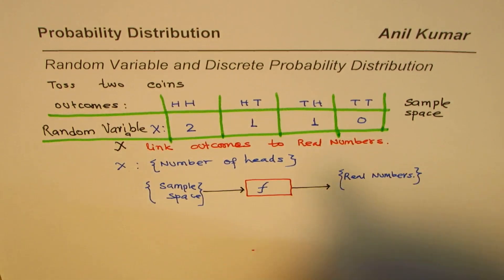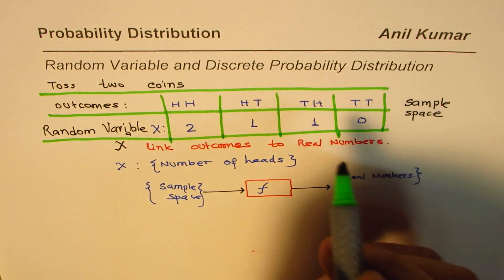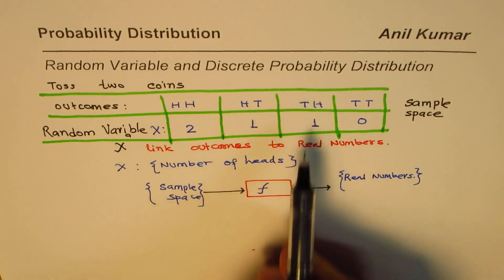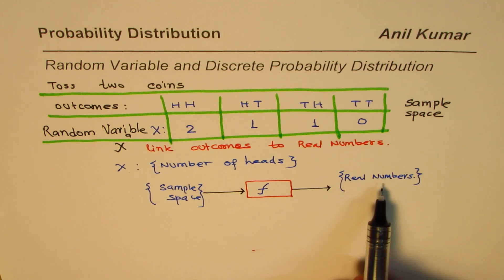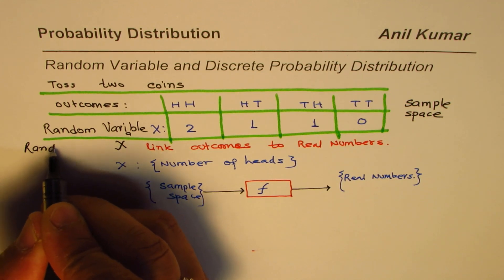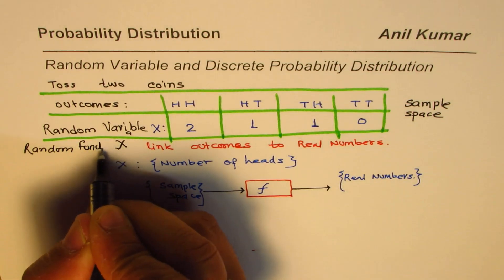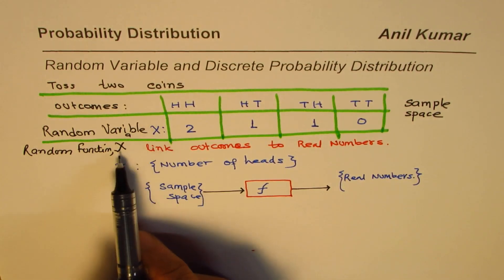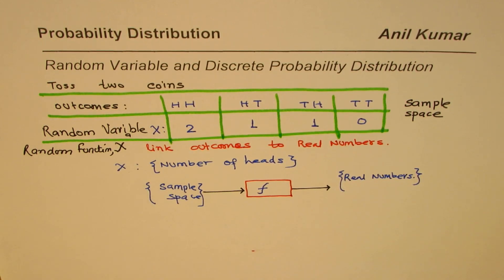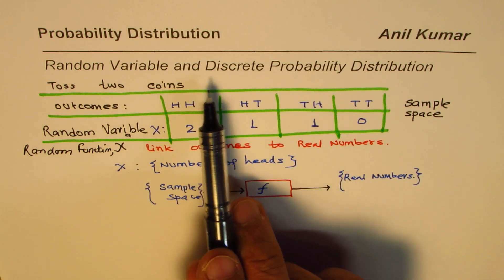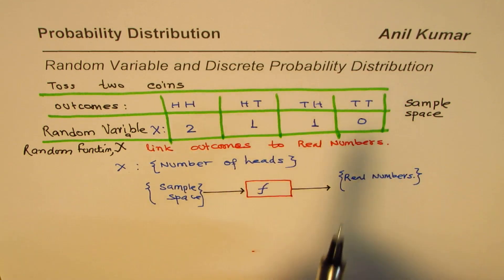We have linked all the outcomes with numbers — that is what a random variable is. Since it is a machine converting outcomes to real numbers, we also call it a random function. It should always be written in capital letters, for example X or Y.